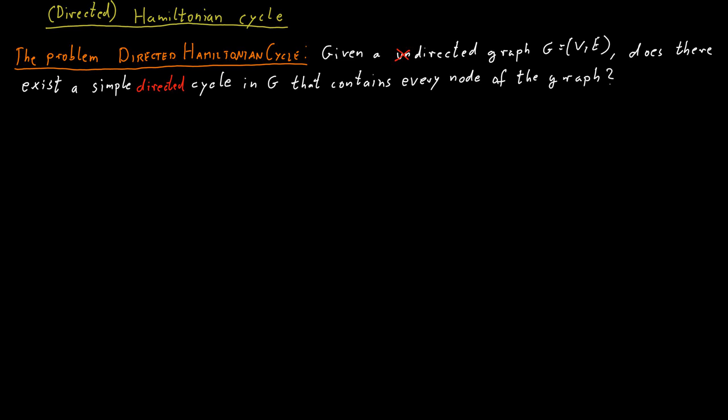So the input is a digraph, and the question is if there exists a simple directed cycle in this graph G that contains every node of the graph.